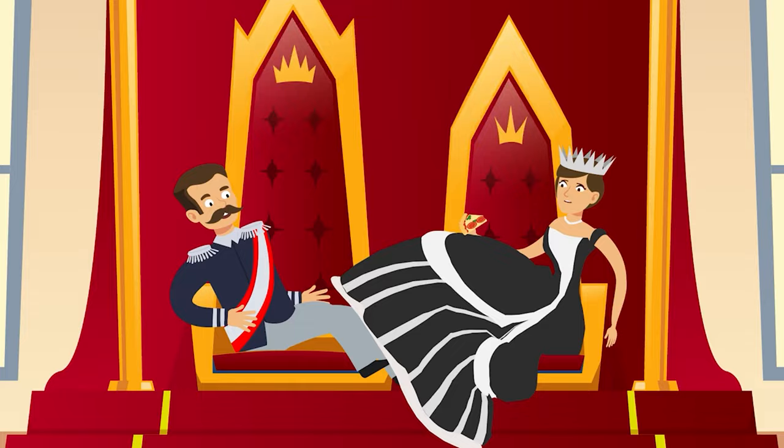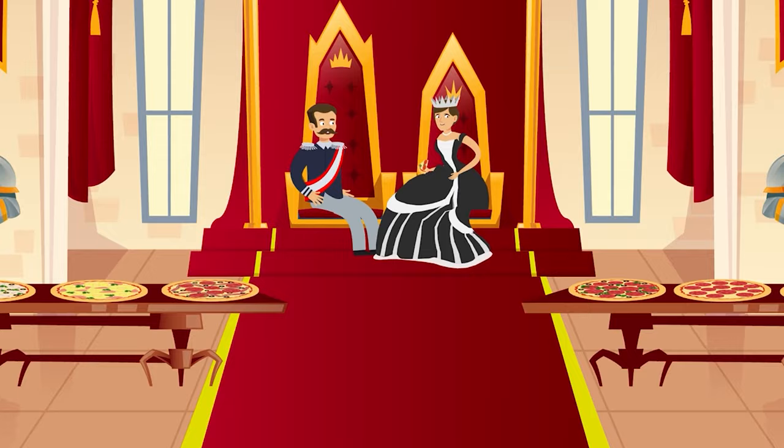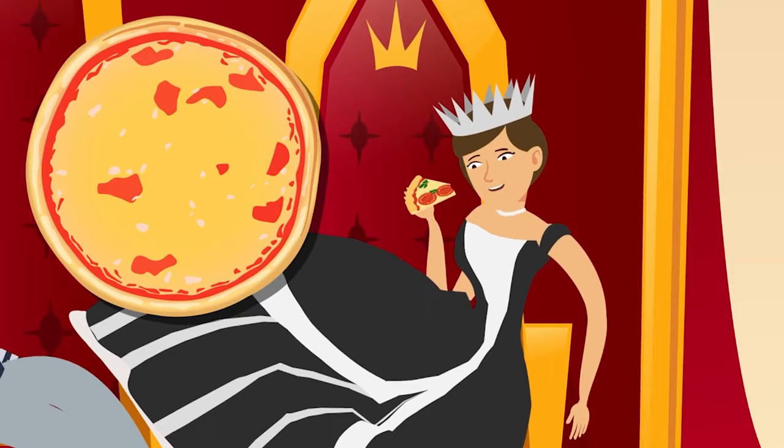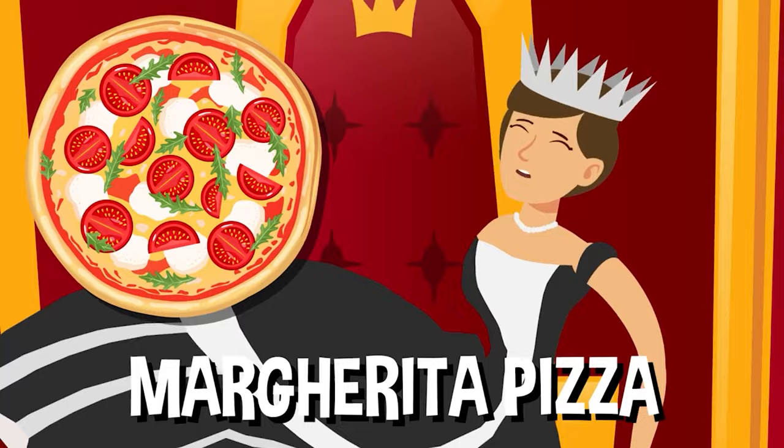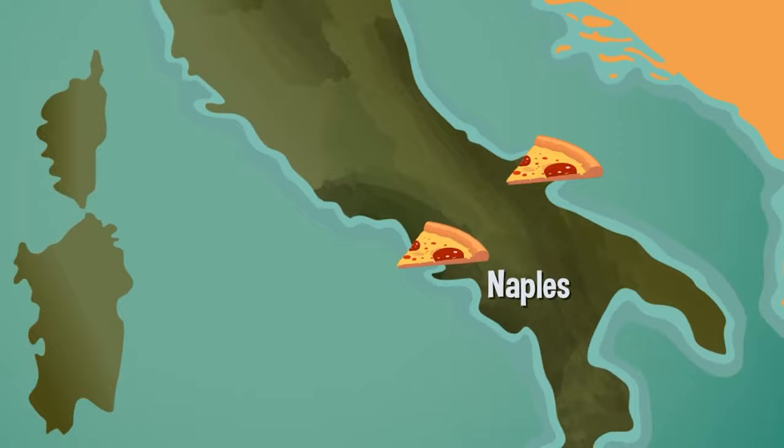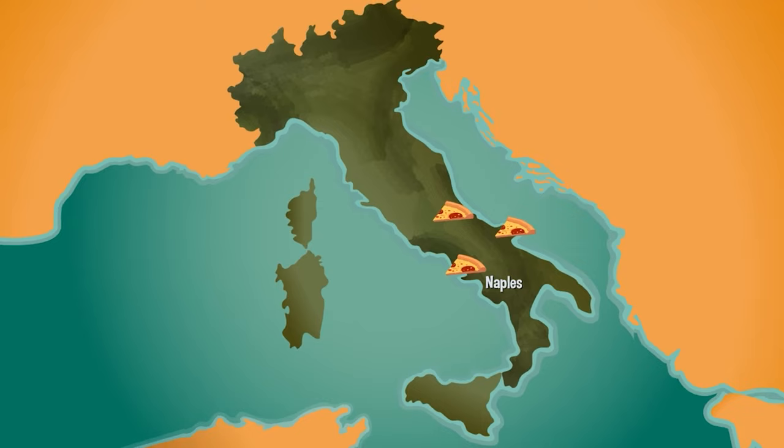They apparently ate several different pies and loved them all. The queen especially loved a specific version, a pizza pie topped with soft mozzarella cheese, red tomatoes, and green basil. If that sounds familiar, it's because we still call that a margarita pizza today. Now, whether or not this bit of historical pizza binging ever happened, it's clear that pizza as we know it got its start in Naples around this time. But if the king and queen did have a slice, it didn't start an overnight sensation across Italy.